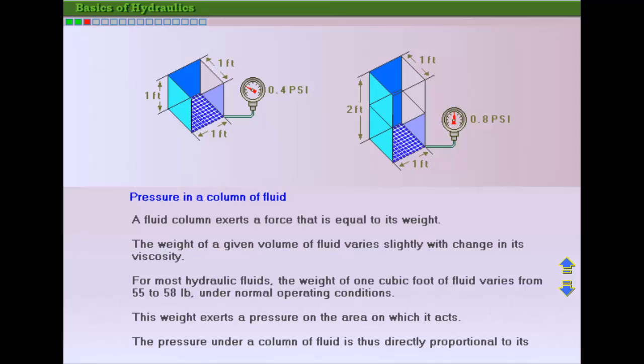As shown in the figure, the pressure exerted by a one-foot column of oil is 0.4 psi.